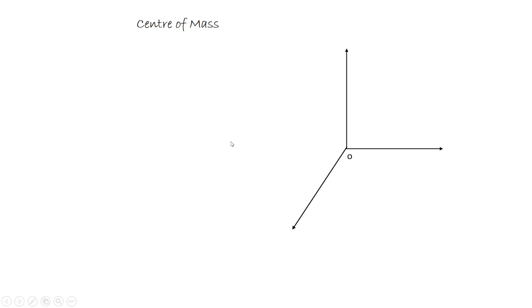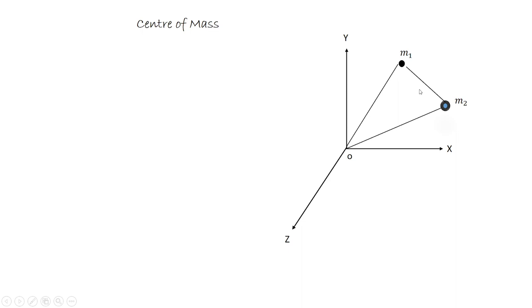Next is the center of mass. Looking at the x, y, z axes with an origin, we place mass m1 at position r1 from the origin and mass m2 at position r2. The distance between the two particles is r equal to r1 plus r2. The center of mass R is given by R equal to m1*r1 plus m2*r2 divided by m1 plus m2.